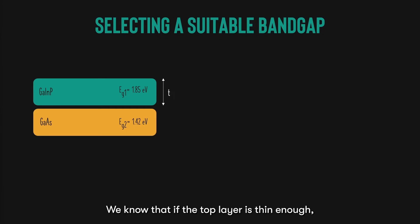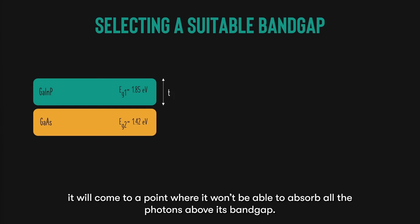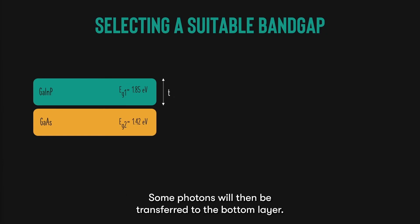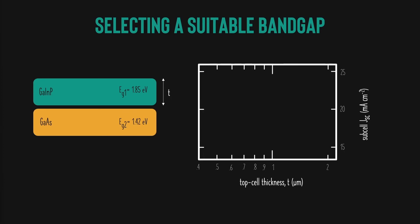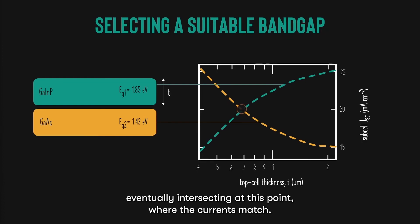We know that if the top layer is thin enough, it will come to a point where it won't be able to absorb all the photons above its bandgap. Some photons will then be transferred to the bottom layer. As we decrease the thickness of the top cell, the top cell short circuit current decreases, while the bottom cell short circuit current increases, eventually intersecting at this point where the currents match.